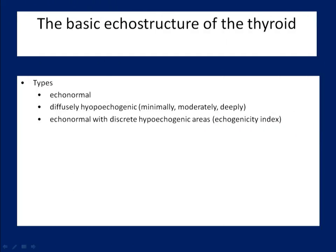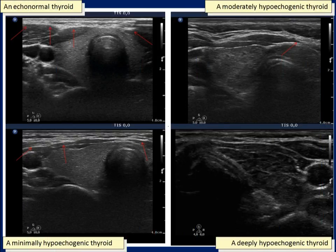The echo structure of a thyroid lobe may be normal or hypoechoic. We prefer to differentiate according to the degree of hypoechogenicity. The thyroid frequently presents a basically echonormal structure with various amounts of hypoechoic areas in the event of autoimmune diseases and de Quervain's thyroiditis. The echogenicity index reflects the estimated amount of hypoechoic areas. The connective tissue ventral to the thyroid is hypoechoic tissue, while the muscle between the connective tissue and the thyroid is a deeply hypoechoic structure.